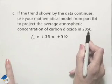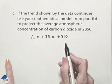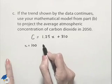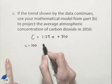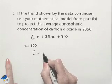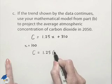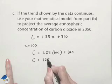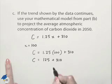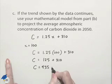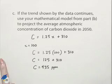In the year 2050, we're looking at x equal to 100. That would be 100 years beyond the year 1950. So when x equals 100, we end up with C equals 1.25 multiplied times 100 plus 310. So that's going to be 125 plus 310, which gives us a result of 435. So that would be 435 parts per million.